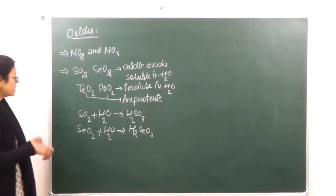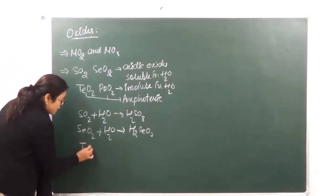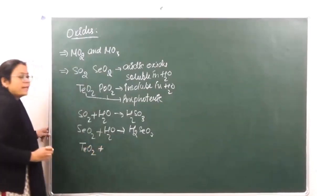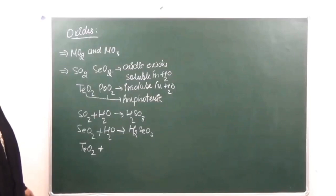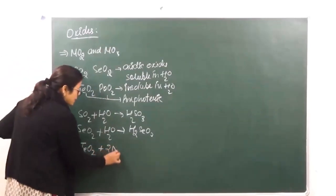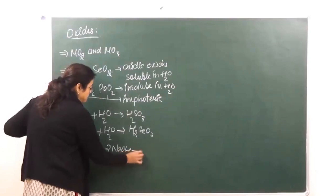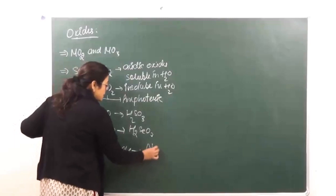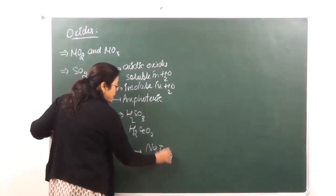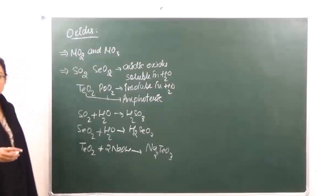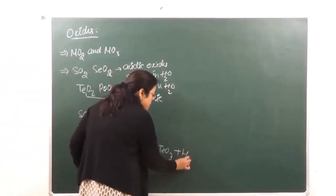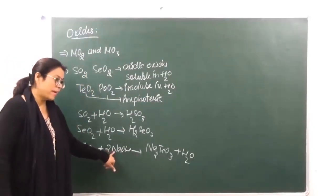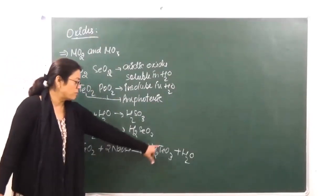This shows the acidic character. Whereas when we are talking of tellurium dioxide, we are saying it is an amphoteric oxide, so it should react with both acids and bases. It reacts with NaOH, and reacting with NaOH it gives us sodium tellurate — this is a salt — plus water. So this is a neutralization reaction: acid plus base gives salt plus water.